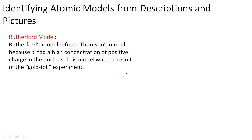So the next model we're going to look at is Rutherford's model. Rutherford's model refuted Thompson's model, because actually he discovered that an atom had a high concentration of a positive charge in the nucleus. This model was the result of his gold foil experiment. So what he discovered was the proton. He discovered that there's something in the center right here in the nucleus that has a very high positive charge, and there are electrons floating around it.